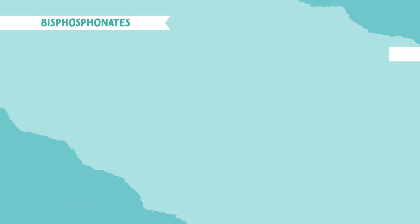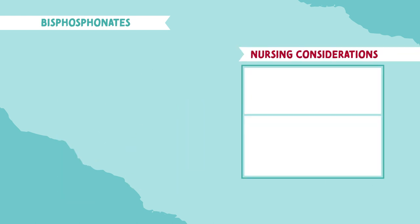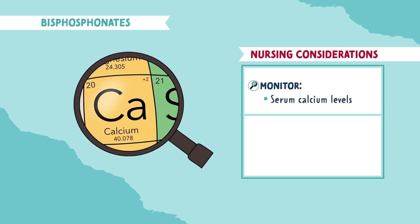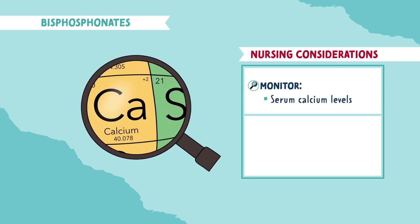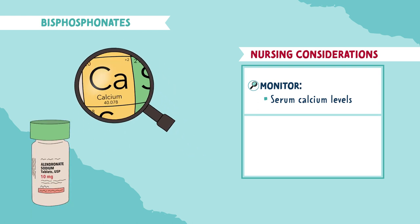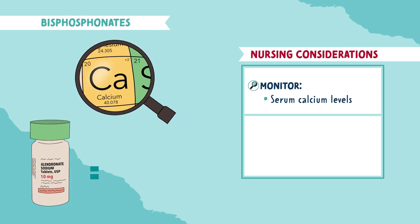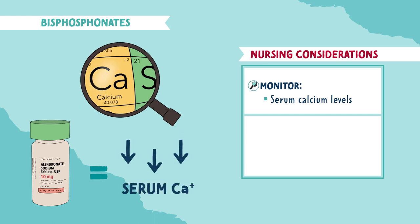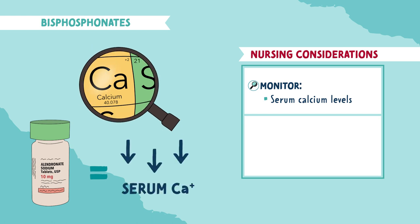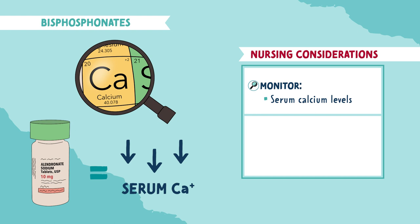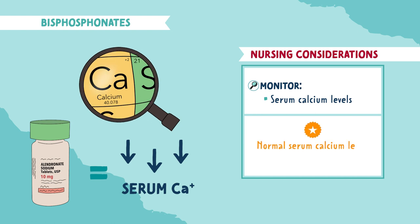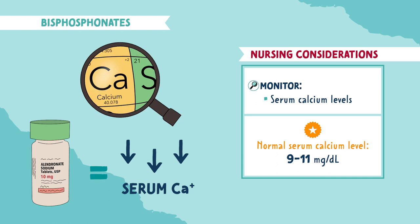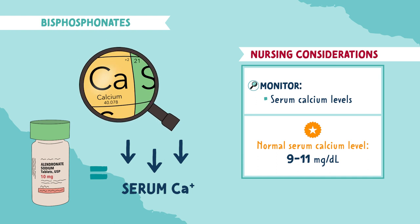For nursing considerations, you want to monitor your patient's serum calcium levels. Hypocalcemia is a risk for patients taking bisphosphonates. As bone resorption slows, more calcium remains in the bone, leading to less in the bloodstream. A normal serum calcium level is 9 to 11, so be sure to monitor for levels less than 9, indicating hypocalcemia.